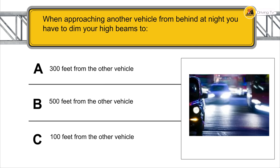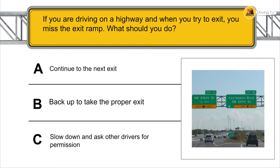When approaching another vehicle from behind at night, you have to dim your high beams at 500 feet from the other vehicle.